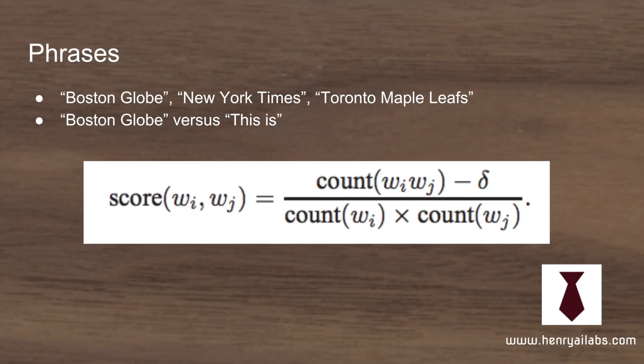The next idea is accounting for phrases — things like 'Boston Globe,' where the individual words don't make sense alone, but together they name a news publication. To avoid tokenizing common but meaningless co-occurrences like 'and uh' or 'this is,' they only choose phrases that occur frequently together.